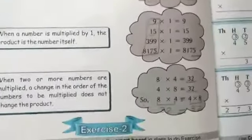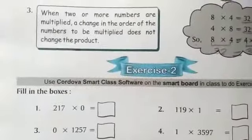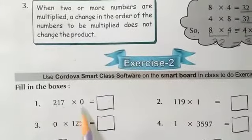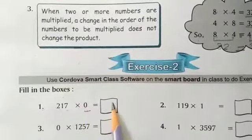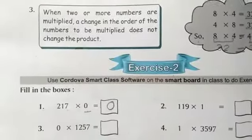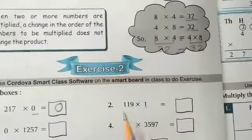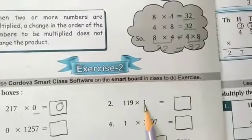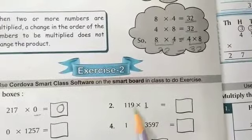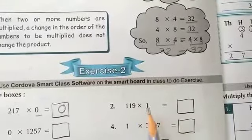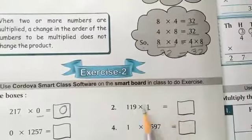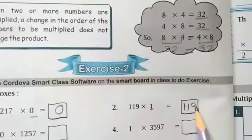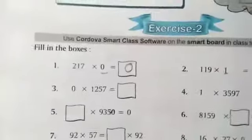Now we will do the first question: 217 multiplied by 0. The answer is 0. Second question: 119 multiplied by 1. The answer is the same — 119. Because when we multiply by 1, the answer is the same digit.